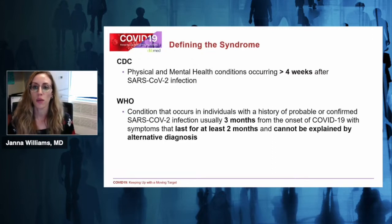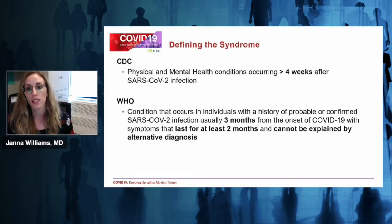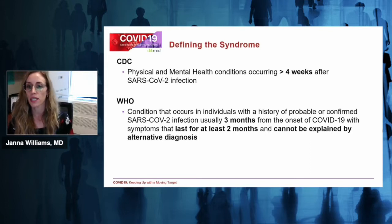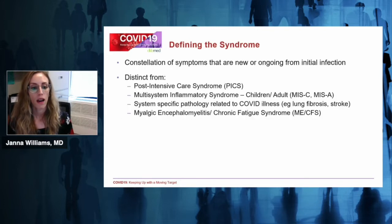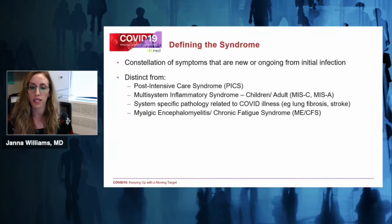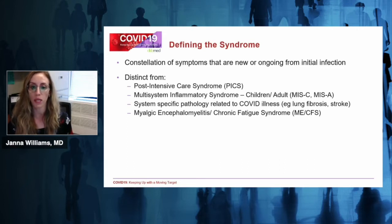The CDC defines a post-COVID condition as any physical or mental health condition occurring greater than four weeks after SARS-CoV-2 infection. The WHO characterizes it slightly differently as any development of symptoms starting usually three months after onset of COVID-19, with symptoms lasting at least two months and not explained by any other illness. There's no specific diagnostic criteria — it's a general constellation of symptoms that are new or ongoing from the initial infection, and it's distinct from post-intensive care syndrome, multi-system inflammatory syndrome in children and adults.